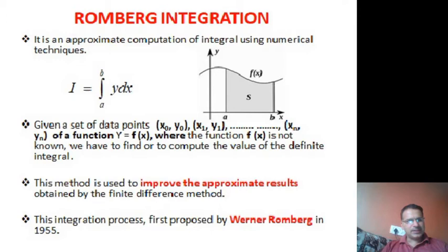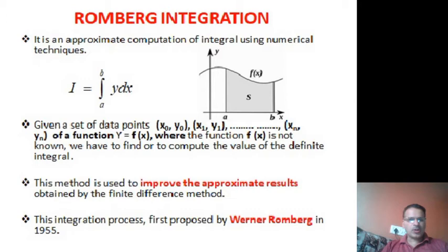Given a dataset of points (x0,y0), (x1,y1), ..., (xn,yn) of a function, we have to find the integral from a to b. We divide it into a number of intervals to find the area. For better accuracy, we use formulae like the trapezoidal rule, Simpson's 1/3 rule, Simpson's 3/8 rule, and Weddle's rule. Here we use the trapezoidal rule and improve its accuracy further — this process is called Romberg integration, first proposed by Werner Romberg in 1955.